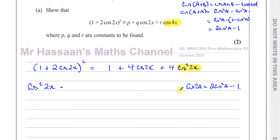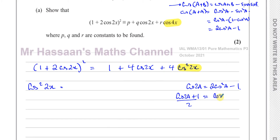So that's where the identity cos2a = 2cos²a − 1 comes from. You should know this, but if you forget it, it's easy to deduce from the formula book. Now I'm going to make cos²a the subject: adding 1 to both sides gives cos2a + 1 = 2cos²a, so cos²a = (cos2a + 1) / 2.